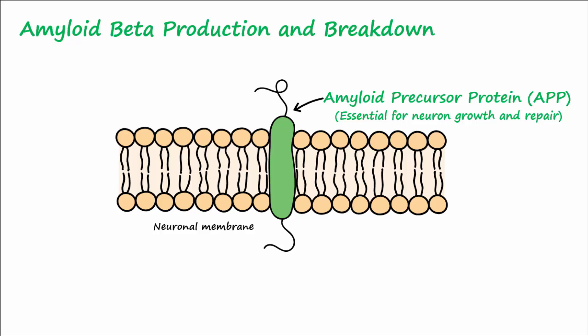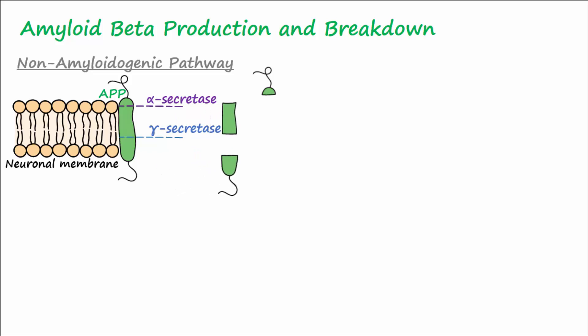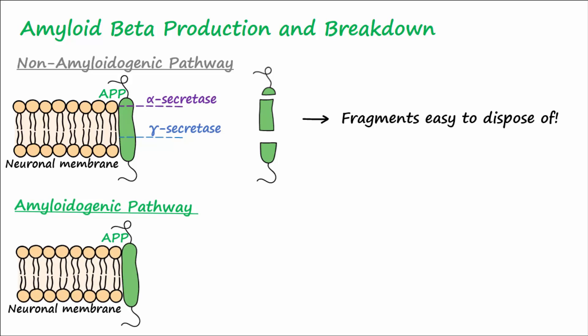APP is broken down through two major pathways. The first is the non-amyloidogenic pathway, where the enzymes alpha secretase and gamma secretase sequentially cleave APP at certain regions to produce smaller fragments that the body can readily dispose of. The second pathway is the amyloidogenic pathway, which produces amyloid beta.